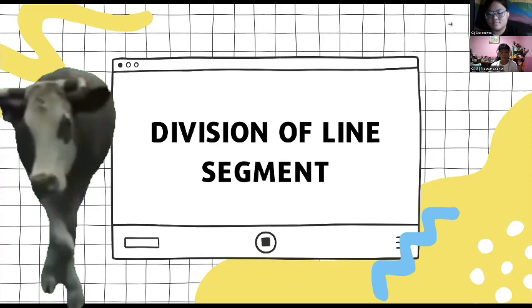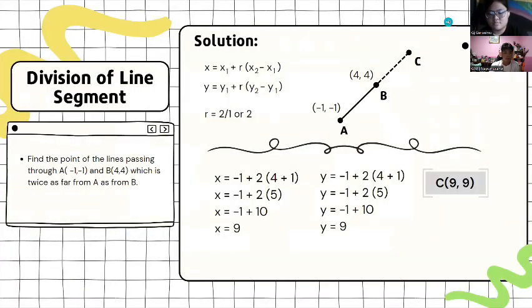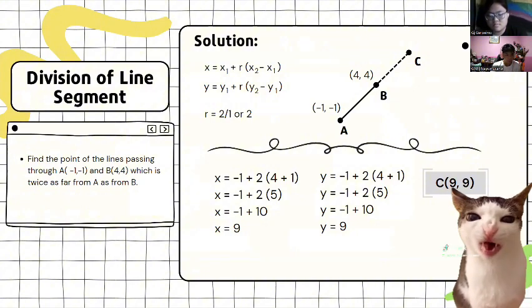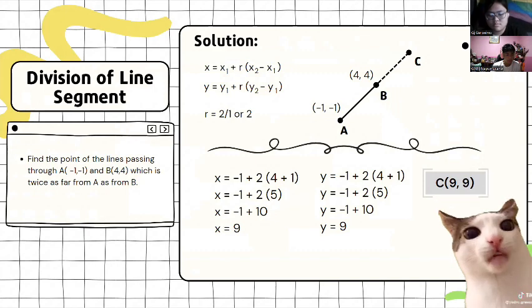In the next part is a division of line segment. The first problem is to find the point of the lines passing through A (-1, -1) and B (4, 4), which is twice as far from A as from B.